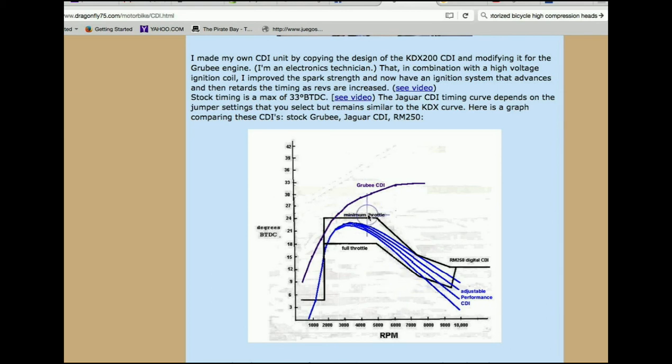So the stock maximum RPM for the motorized bicycle engine is about right here. So you've got this amount of ignition timing, which is about 32 degrees before top dead center, whereas it should be all the way down here, like 19 degrees.